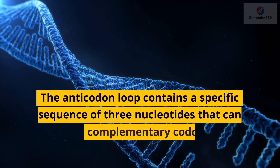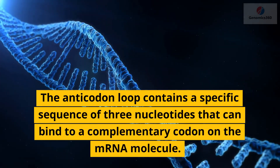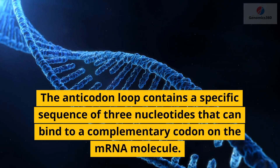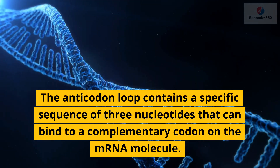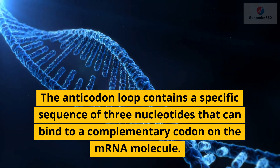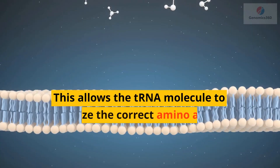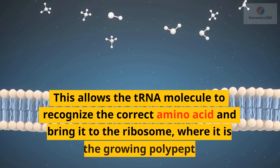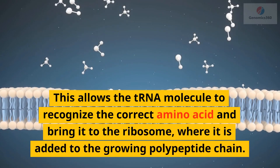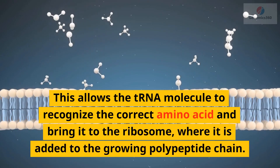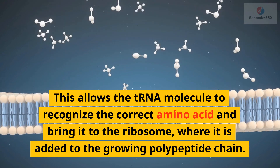The anticodon loop contains a specific sequence of three nucleotides that can bind to a complementary codon on the mRNA molecule. This allows the tRNA molecule to recognize the correct amino acid and bring it to the ribosome, where it is added to the growing polypeptide chain.